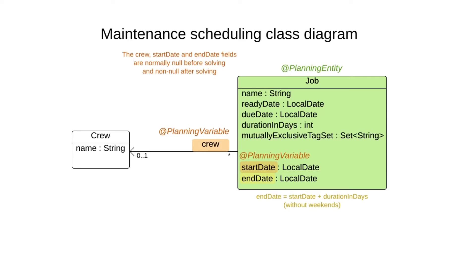The way we tell TimeFold what it can change is by adding annotations. We add a planning variable annotation on the crew field of the Job class, and the same for the start date, so TimeFold can pick the right start date for each job. The end date will be automatically calculated by taking the start date and adding the duration in days.